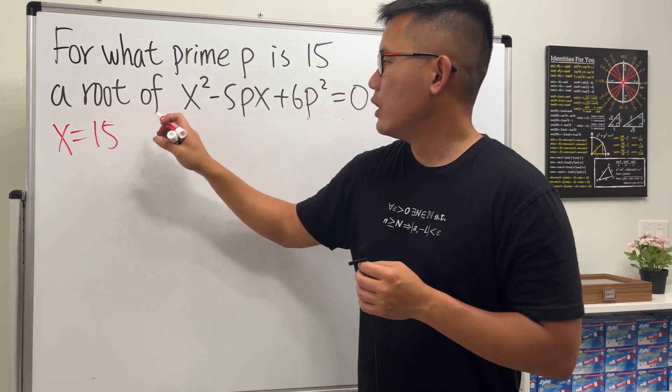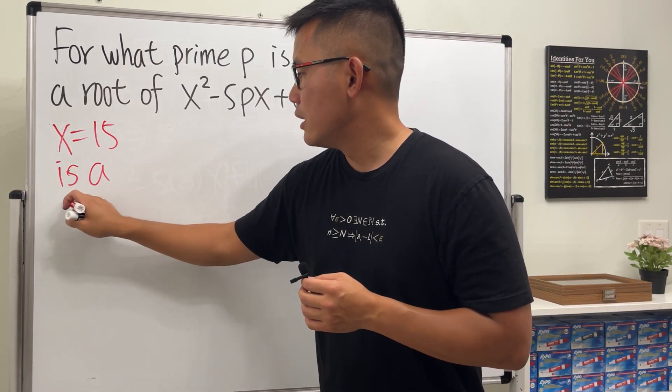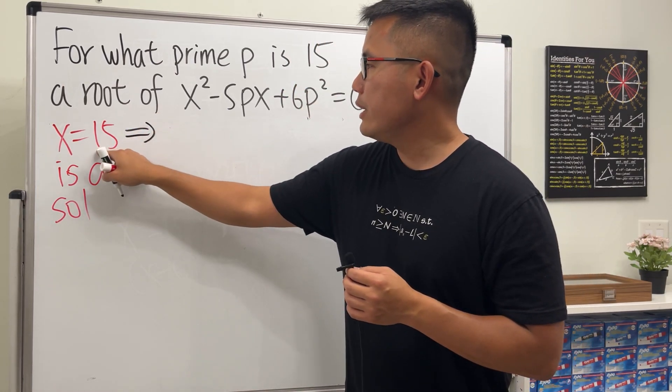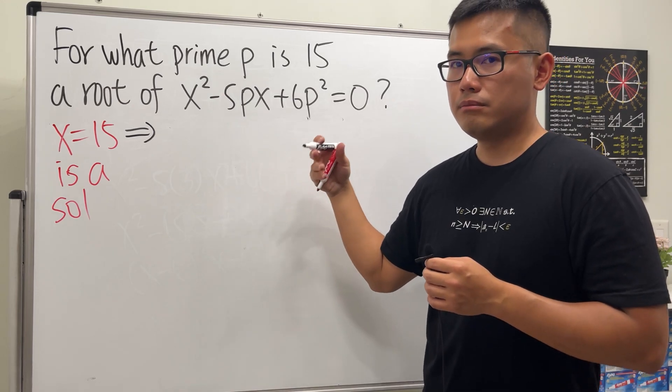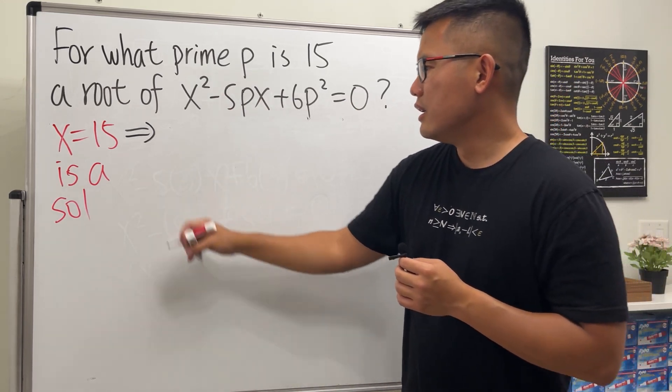So what we can do is we can just plug in 15 into all the x's and then make it equal to 0, and we can solve for P nicely. So that's the idea.